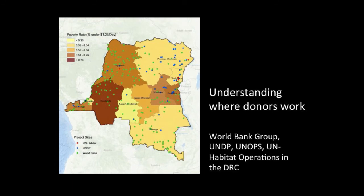We also want to understand where different donors work. This was an exercise we did when Ban Ki-moon and the president of the World Bank traveled together to the Democratic Republic of Congo. We took data from UN agencies and matched them up to see where the UN was working and where the World Bank was working. You can see that the World Bank is more in the west where there are poorer areas, and the UN is more in the east where there are fragile states — a good exercise to see where different organizations are working.